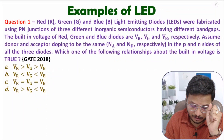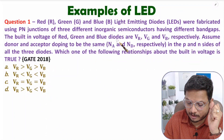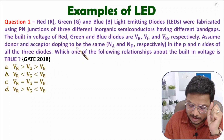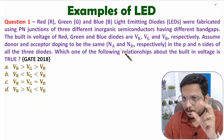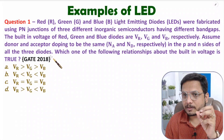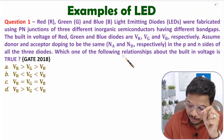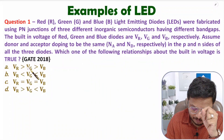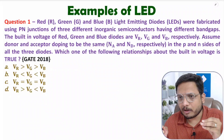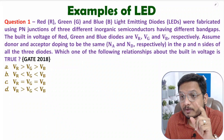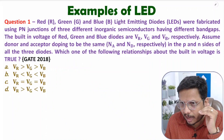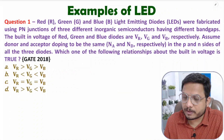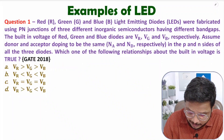The built-in voltages of the red, green, and blue diodes are Vr, Vg, and Vb respectively. Assume donor and acceptor doping (Na and Nd) to be the same for all three diodes. The question asks which relationship among Vr, Vg, and Vb is true. All the diodes are equal dimensionally — only the materials differ — so based on color we need to find which diode has higher or lower built-in voltage.